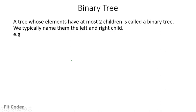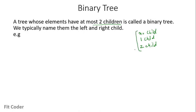A binary tree is a tree in which each element has at most two children. So either it can have no child, one child, or at most two children. If all the nodes of the tree satisfy this property, then we can say that the tree is a binary tree. Because at most only two children can be there, the usual naming convention is left child and right child.